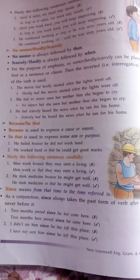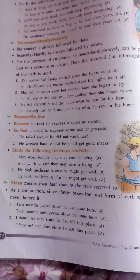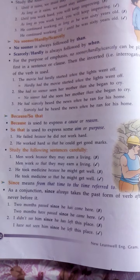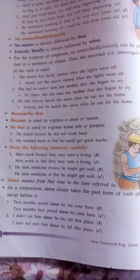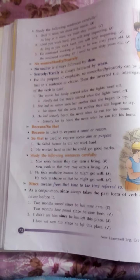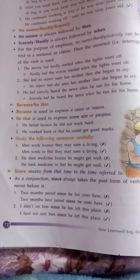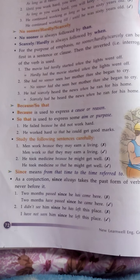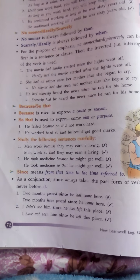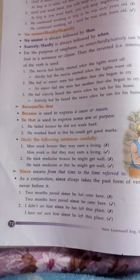'Because' and 'so that': 'because' is used to express a cause or reason. If someone asks why you are late, you say 'because it was raining' — that gives the reason. 'So that' is used to express an aim or purpose. For example: 'He failed because he did not work hard' — reason. 'He worked hard so that he could get good marks' — aim or purpose. So 'because' gives a reason, and 'so that' gives an aim or purpose.